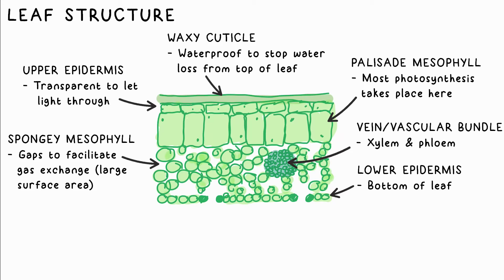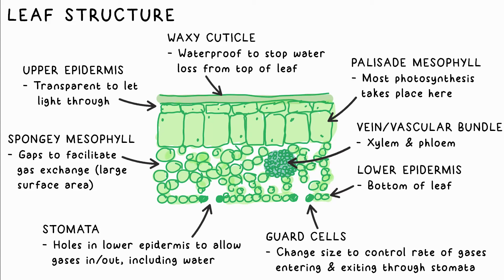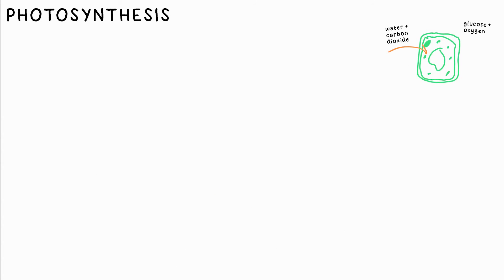The lower epidermis is the bottom-most layer of the leaf and has holes called stomata, which is how gases enter and exit the leaf. The size of a stoma is controlled by guard cells that flank the hole — they change size to control the rate at which gases enter and leave. For example, they close the stomata at night to reduce water loss, as less water is needed for photosynthesis.